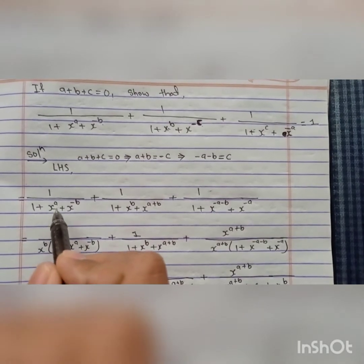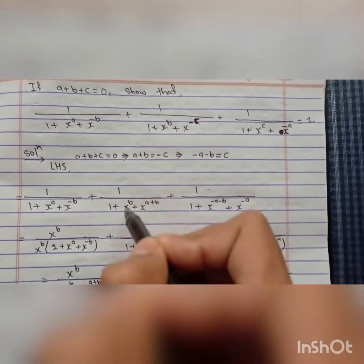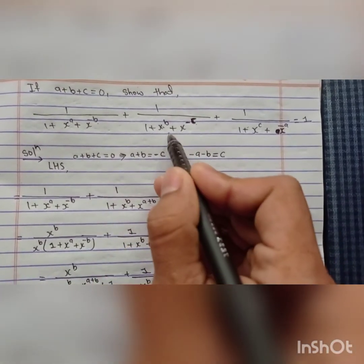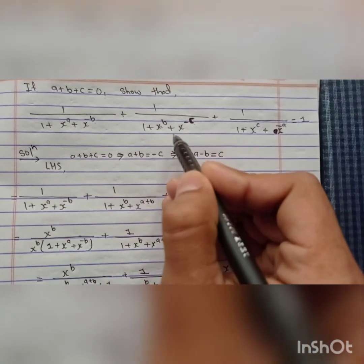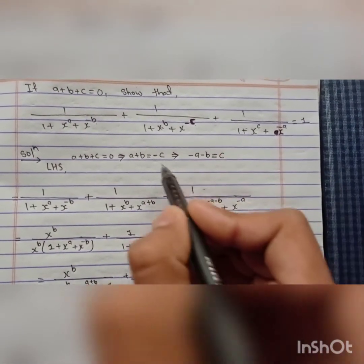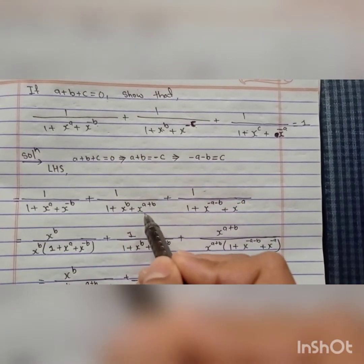Here we have to do nothing because it is already in the a and b form. Here is 1 plus x to the power b, write it as it is. And here is x to the power minus c, but minus c can be replaced as a plus b.